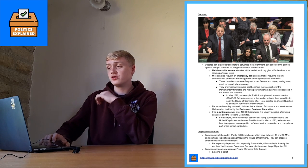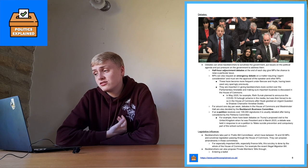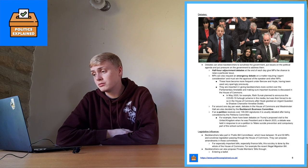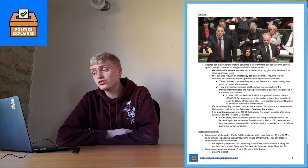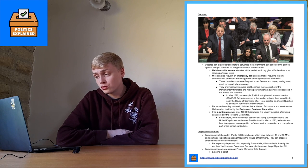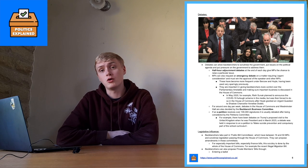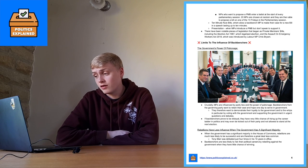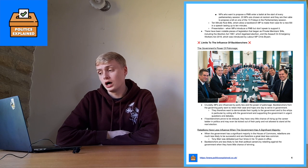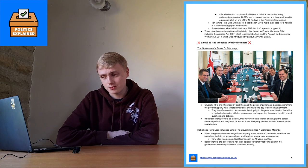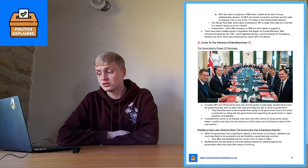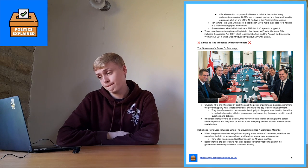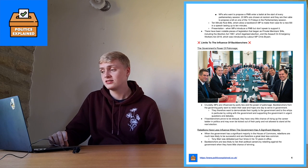A final way backbenchers can have influence is through their legislative influence. Backbenchers take part in public bill committees, which have between 16 and 50 MPs and scrutinise legislation passing through the House of Commons, and they can propose amendments in these committees. Backbenchers can also propose private members' bills through entering a ballot, 10-minute rule bills, or presentation. MPs enter a ballot at the start of parliamentary session and 20 are chosen to propose a bill on one of the 13 Fridays in the session. Notable pieces of legislation began as private members' bills, including the Abortion Act of 1967 and the Assault on Emergency Workers Act of 2018, introduced by Labour MP Chris Bryant.